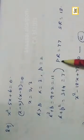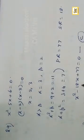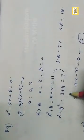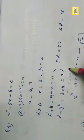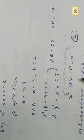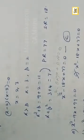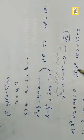Sum of roots = 11+7 = 18. Product of roots = 11×7 = 77. So the equation is x² - 18x + 77 = 0. Option C.